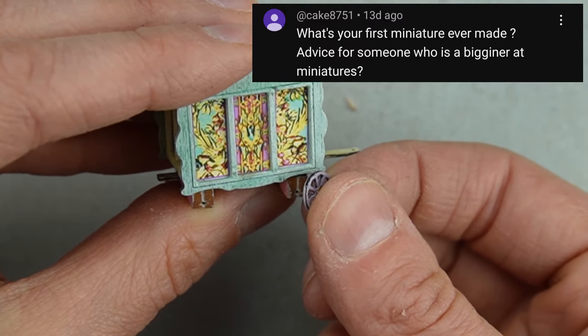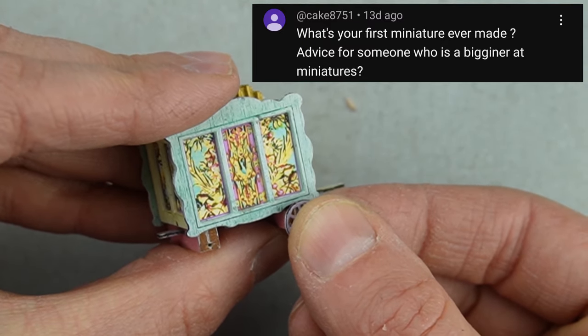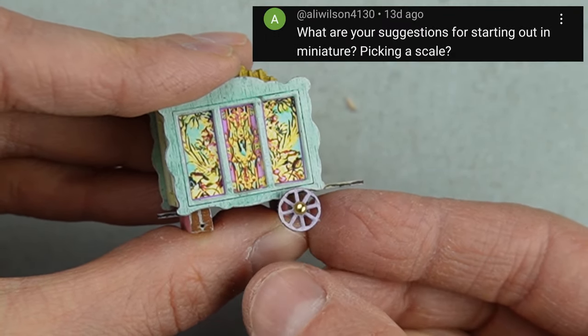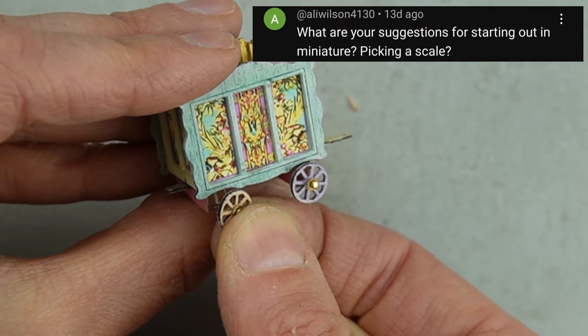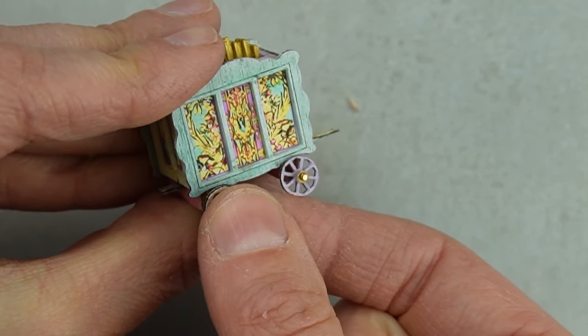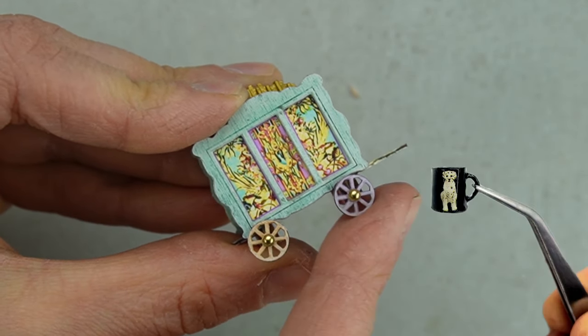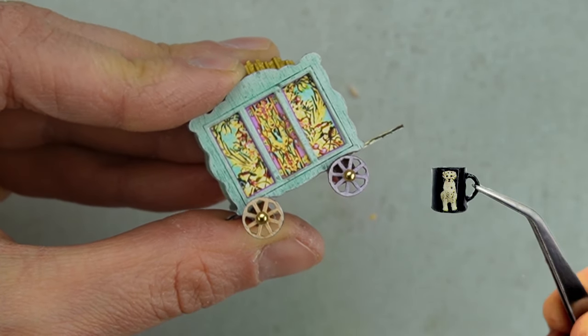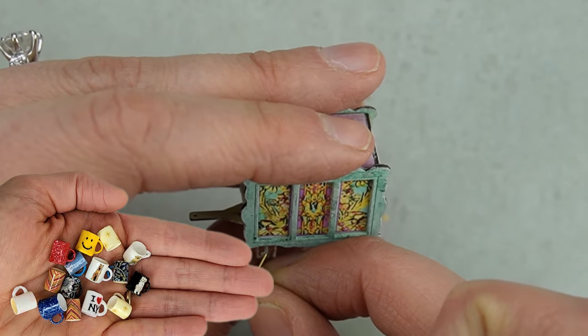My advice for someone who's just starting out in the hobby would probably be to either customize some furniture, repair some furniture, do a kit, or make a very simple accessory like my miniature paper mugs. The paper mugs are really easy to make and very easy to customize.